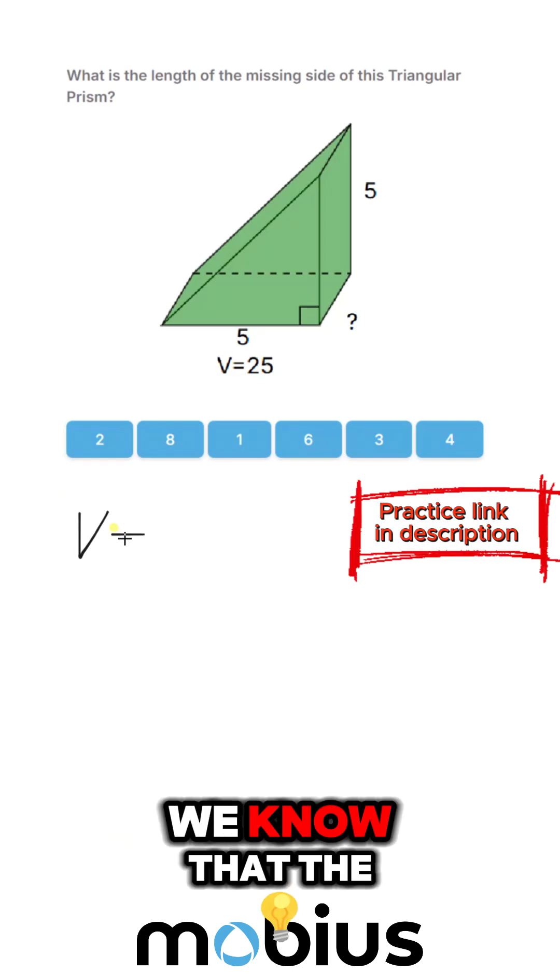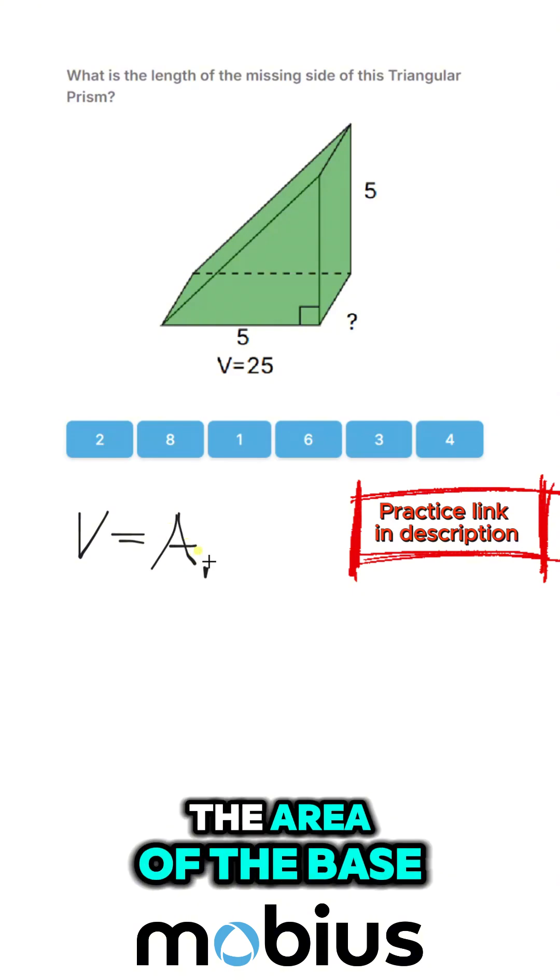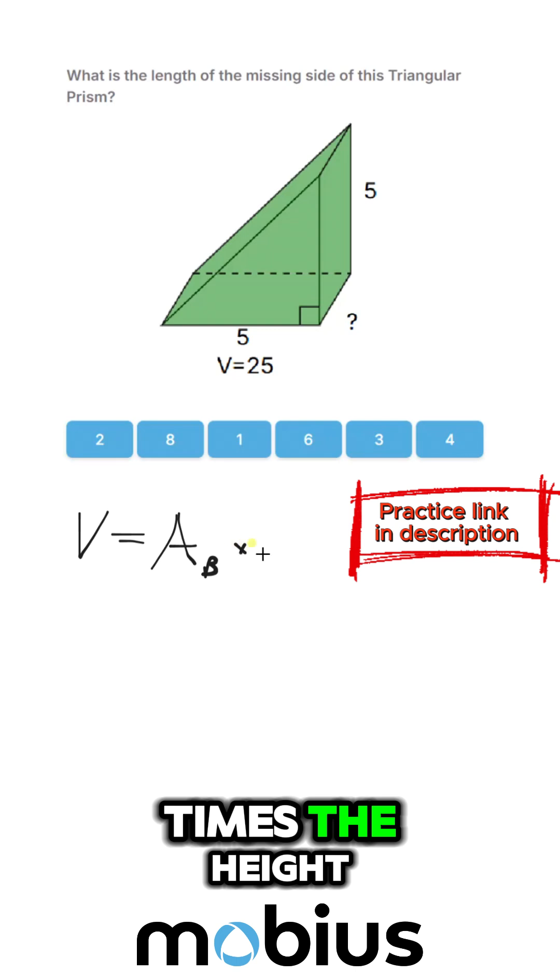And because it's a prism, we know that the volume is going to be the area of the base times the height.